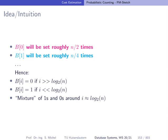The intuition is that the first entry of b will be set by half of the hash values, and so on. There is a region where ones and zeros are mixed, and this position is an approximation of log base 2 of n. Hence we take t — the leftmost zero bit in the b-vector — as the estimate, giving 2^t divided by the correction factor as our estimate of the number of distinct elements in our multiset.